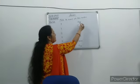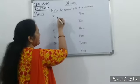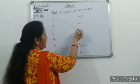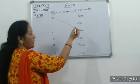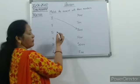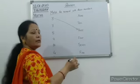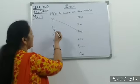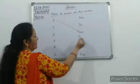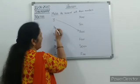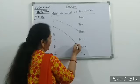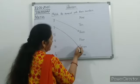First numeral is 3. Now 3 is the spelling. So you need to match 3 — number 3. We need to match 3. Next numeral is 7. Where is 7? S-E-V-E-N 7. So we need to match 7.